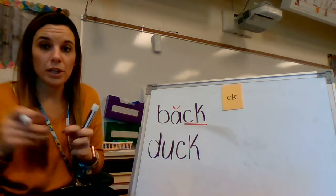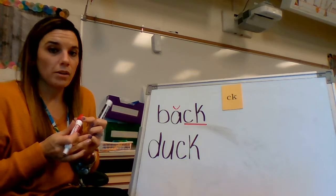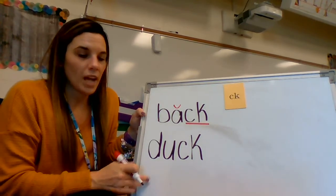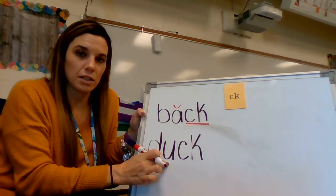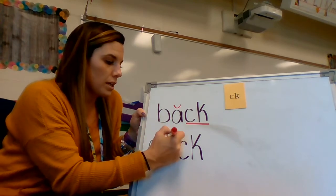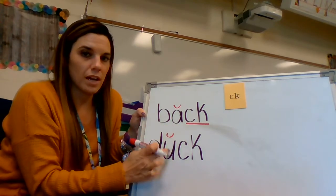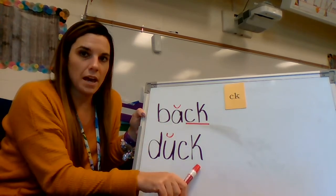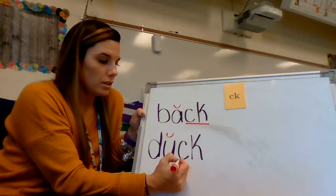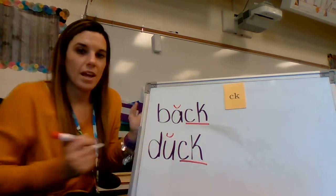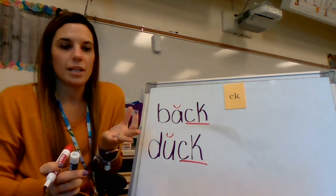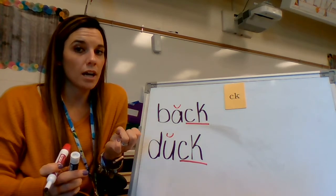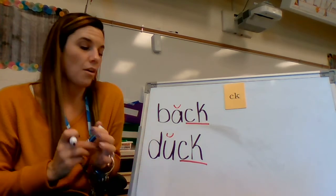Let's mark up our next word. Do you see a short vowel? I do — it's right here, the U. I'm going to mark it up — that's a short vowel, it says /u/. Do you see the digraph CK? Now we can tap out the word: D-U-CK — duck.